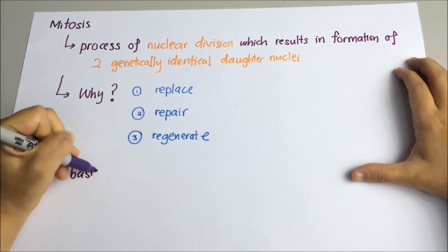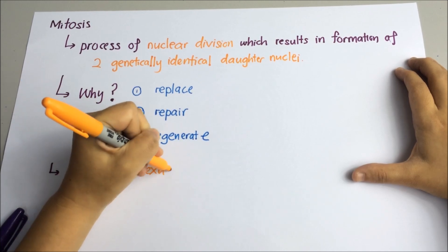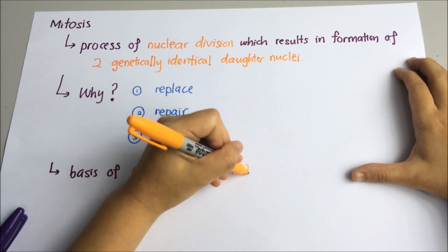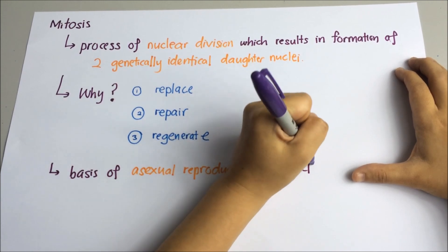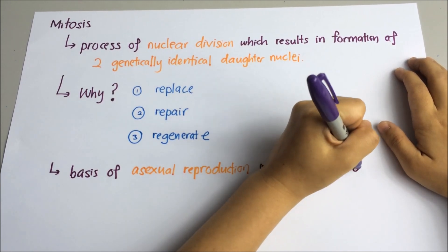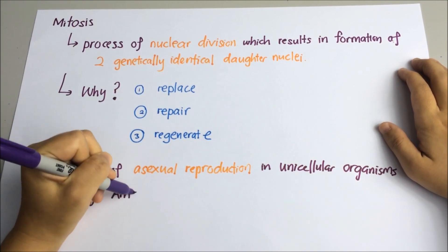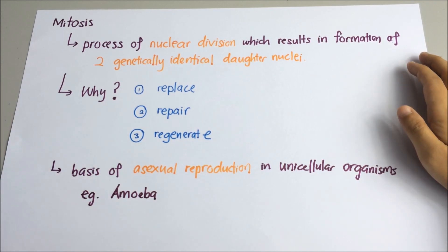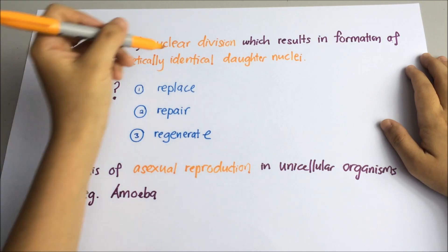It is also important to know that mitosis is used in asexual reproduction in unicellular organisms such as amoeba. Unicellular organism means one cell organism. Asexual reproduction is when an offspring is formed from one organism. It means that all the genes are inherited from just one organism. It does not require two parents and there was no involvement of fusion of gametes.